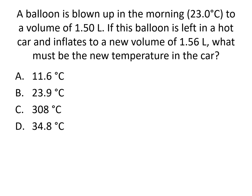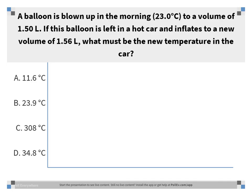Here's a question: a balloon blown up in the morning at 23 degrees Celsius has a volume of 1.50 liters. It's left in a hot car and inflates to a new volume of 1.56 liters. What is the new temperature in the car? The answer is D, 34.8 degrees Celsius. Remember that temperatures must be in Kelvin when using the equation — convert 23°C to Kelvin, solve for T2 in Kelvin, then subtract 273.15 to convert back to Celsius.